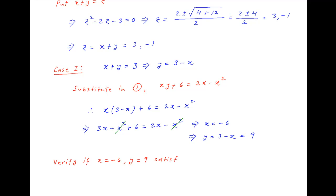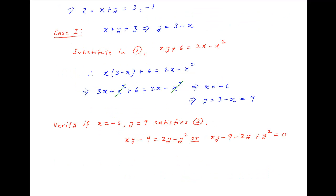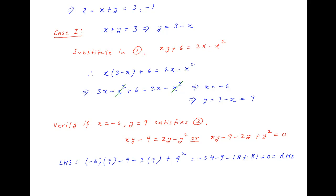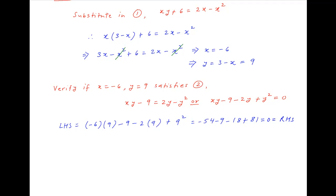Next we verify if x equals minus 6 and y equals 9 satisfies equation 2, which is xy minus 9 equals 2y minus y squared, or equivalently xy minus 9 minus 2y plus y squared equals 0. Putting x equals minus 6 and y equals 9, the left hand side equals (minus 6)(9) minus 9 minus 2(9) plus 9 squared, which equals minus 54 minus 9 minus 18 plus 81, which equals 0. Therefore x equals minus 6, y equals 9 is a solution of the given system of equations.